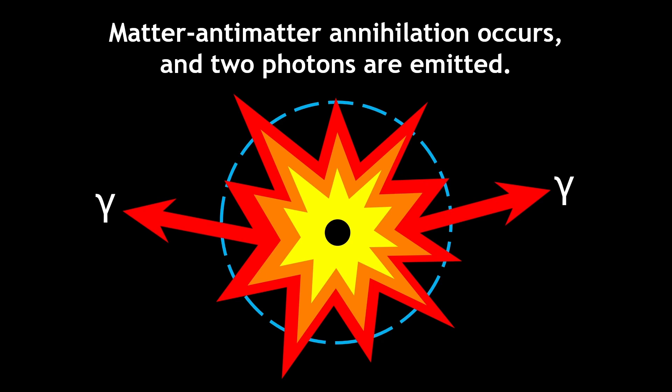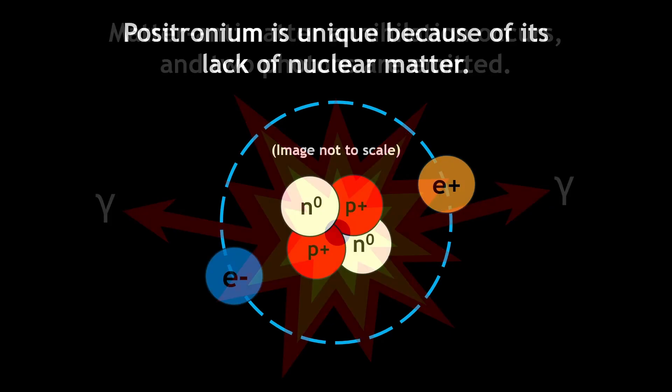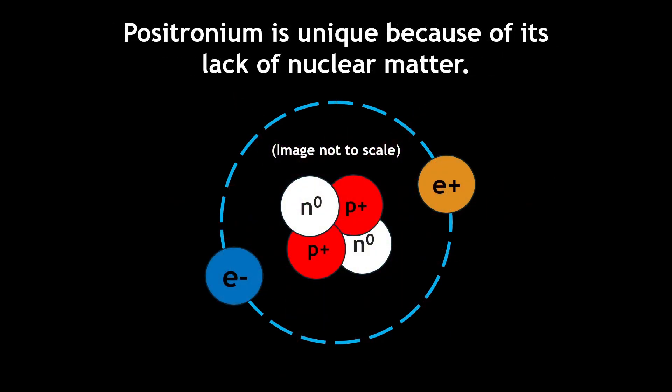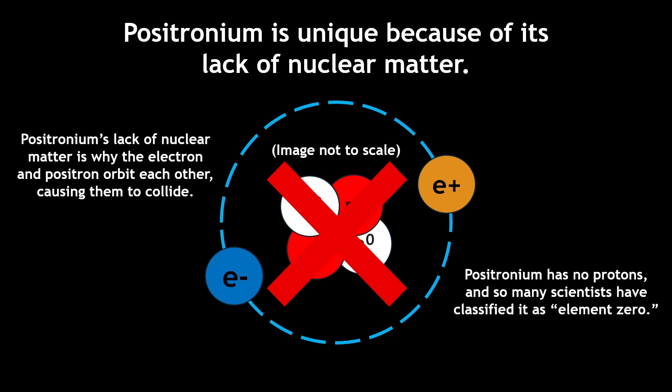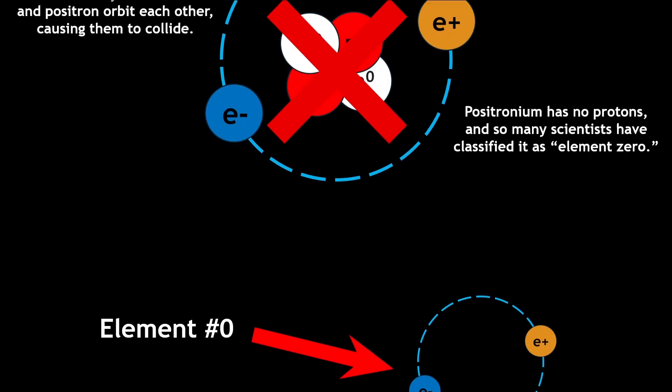What makes positronium so interesting is that it has no nucleus, unlike many other exotic atoms. Because of its lack of protons, many scientists have classified positronium as element zero.